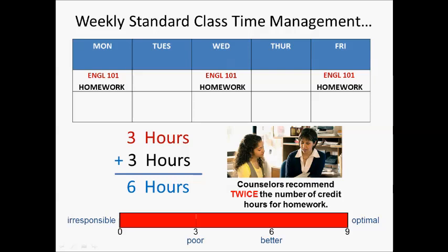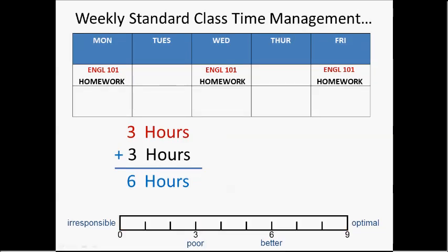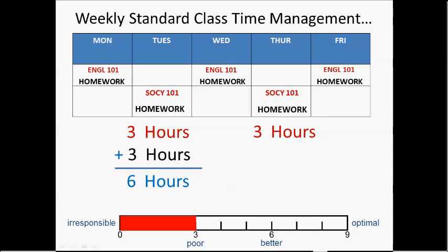Now let's go through this same principle for another class — a Tuesday-Thursday SOCH 101 class. You only have that twice a week, but it goes for an hour and a half each of those two days, which is still three hours of class time. You'll have to do reading in SOCH 101, and since you only have it twice a week, there's going to be more reading to prepare for each of those two classes. The reading and homework will quite likely add up to an additional three hours of work, adding up to six hours.